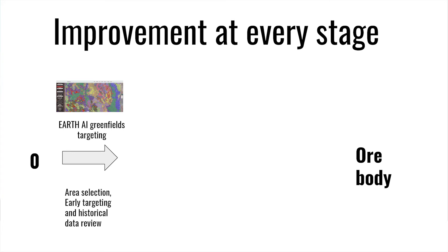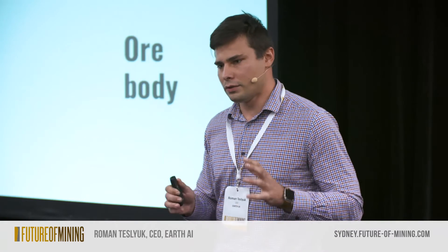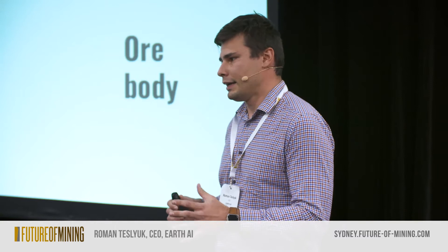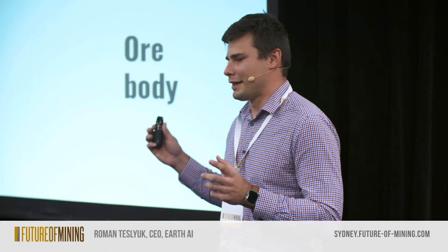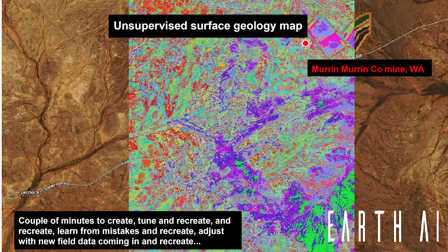Here's our idea on how to simplify exploration — how to get from zero to an ore body much quicker, in four steps. Number one: we have to learn from all historical data, everything that's available from decades of work. That's what we build with Earth AI. We are like Robin Hood — we learn in data-rich areas and predict to data-poor areas. I'll show you two case studies quickly, based on lithium and cobalt projects.